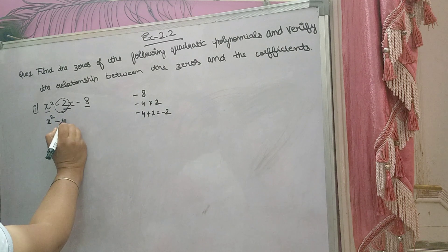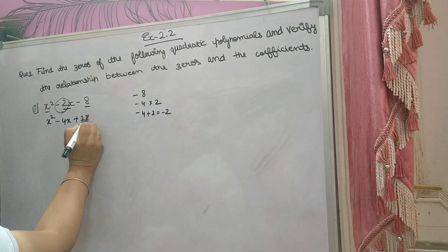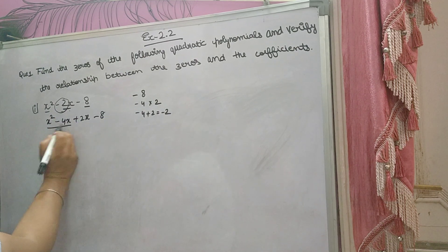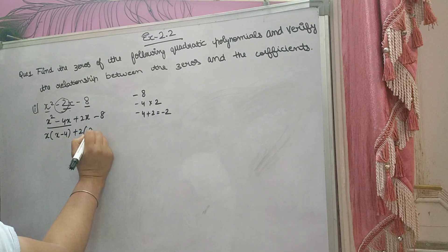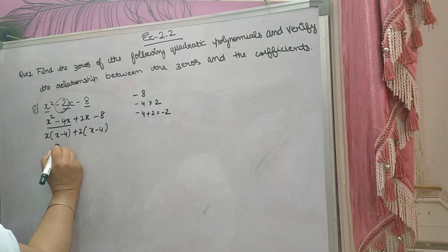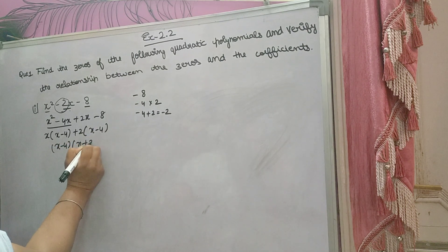x squared minus 4x plus 2x minus 8. Now out of these two you will take x common, you will get x minus 4. Here 2 common, x minus 4. Now here you take x minus 4 common, you will get x plus 2.